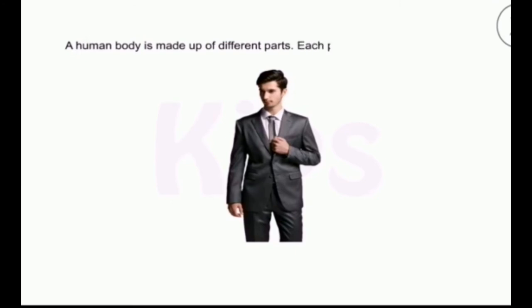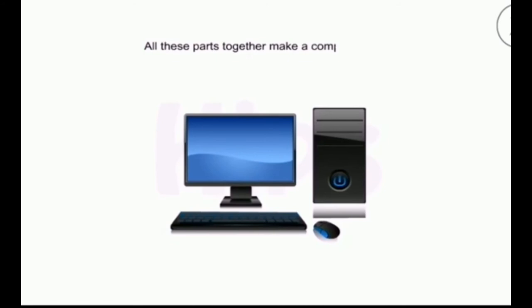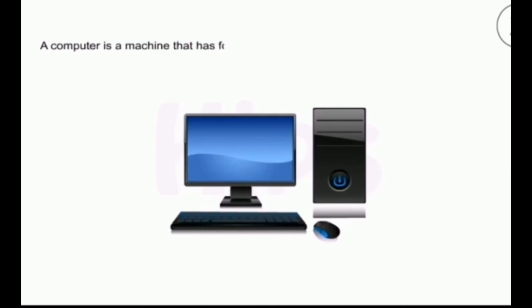A human body is made up of different parts, and each part has a special work to do. In the same way, a computer is made up of different parts, and all these parts together make a computer work. A computer is a machine that has four main parts.